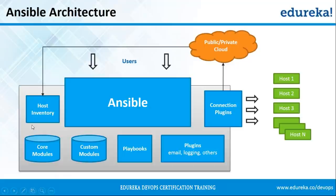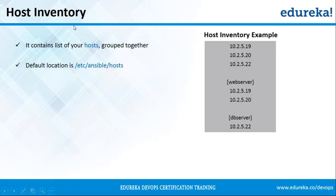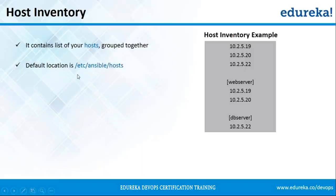The host inventory contains a list of your hosts grouped together. It's just a list of the IP addresses of your nodes. You can name groups of different IP addresses — for example, grouping web servers together and database servers together. All you have to do is write a group name between two square brackets and those hosts will be grouped together. Whenever you want to make configuration changes just on the web server and not on the database server, just mention the group name in the host field and it will only configure your web servers. The default location of your inventory is /etc/ansible/hosts.